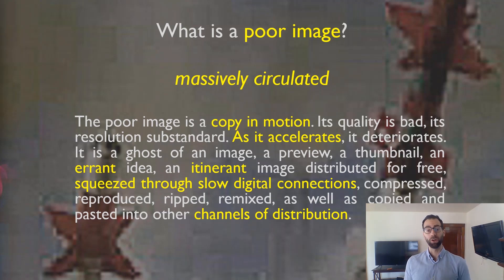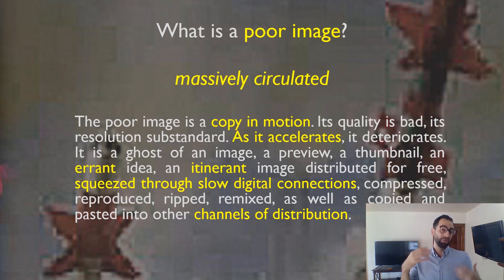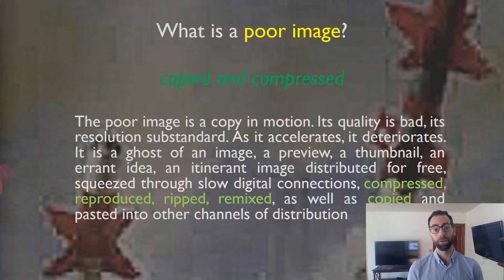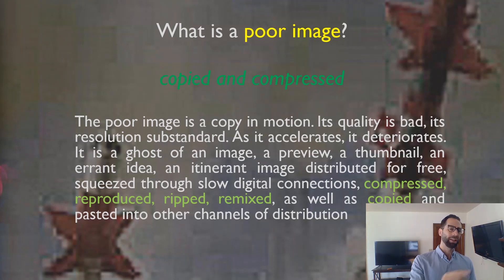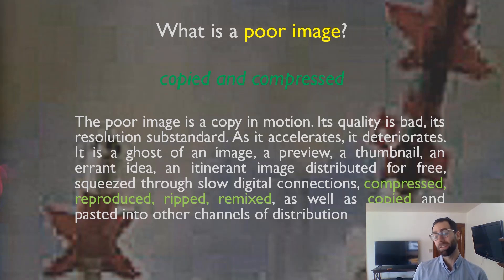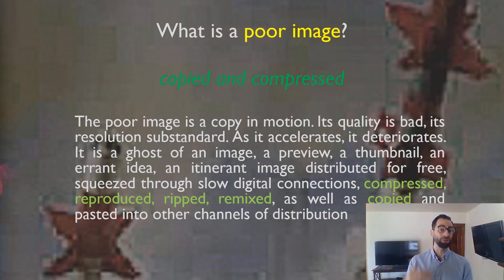The poor visual quality is somehow related to the way in which poor images are circulated in digital networks. That seems to be really important for Steyerl. These images are not just circulated widely amongst digital networks, but they are copied and compressed and remixed. That capacity to copy and compress these images is a function of their digitality, and being copied over and over again is also what partly produces their poor visual quality.